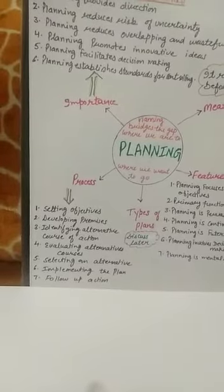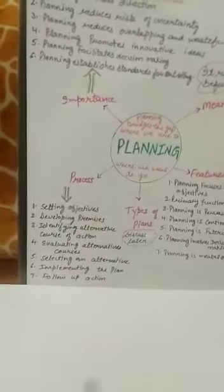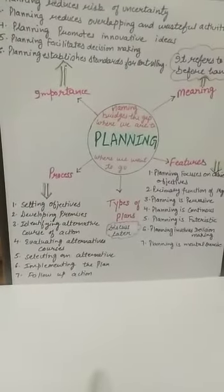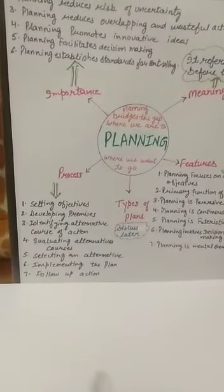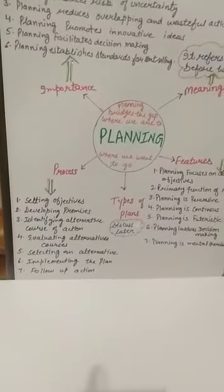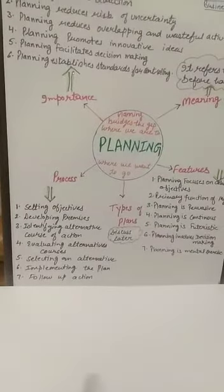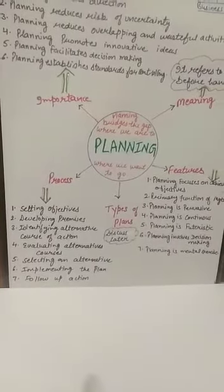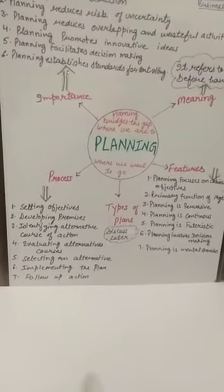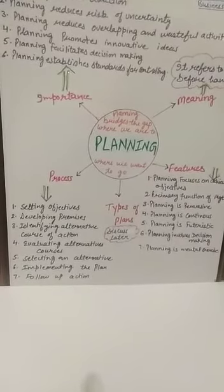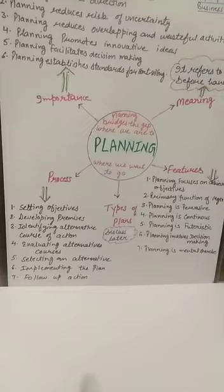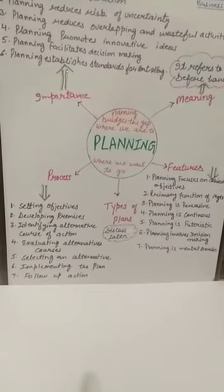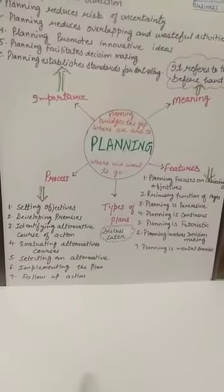The sixth step is implementing the plan — putting the planning into action, doing what is required. In our example, since the second option was chosen, the next step involves contacting an advertisement company and getting a new advertisement made. It could be electronic media or print media, featuring a celebrity or personality at the right place and right time.